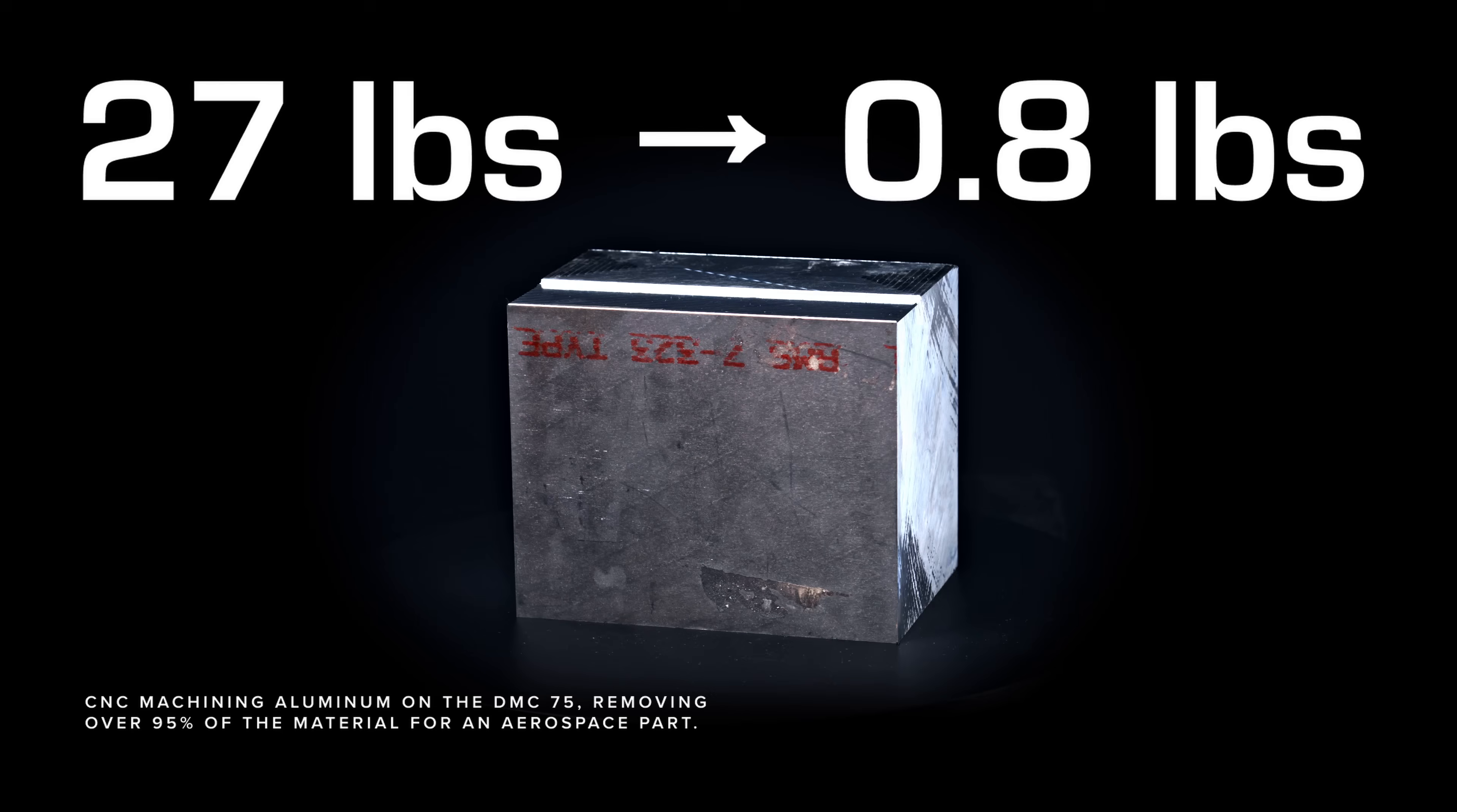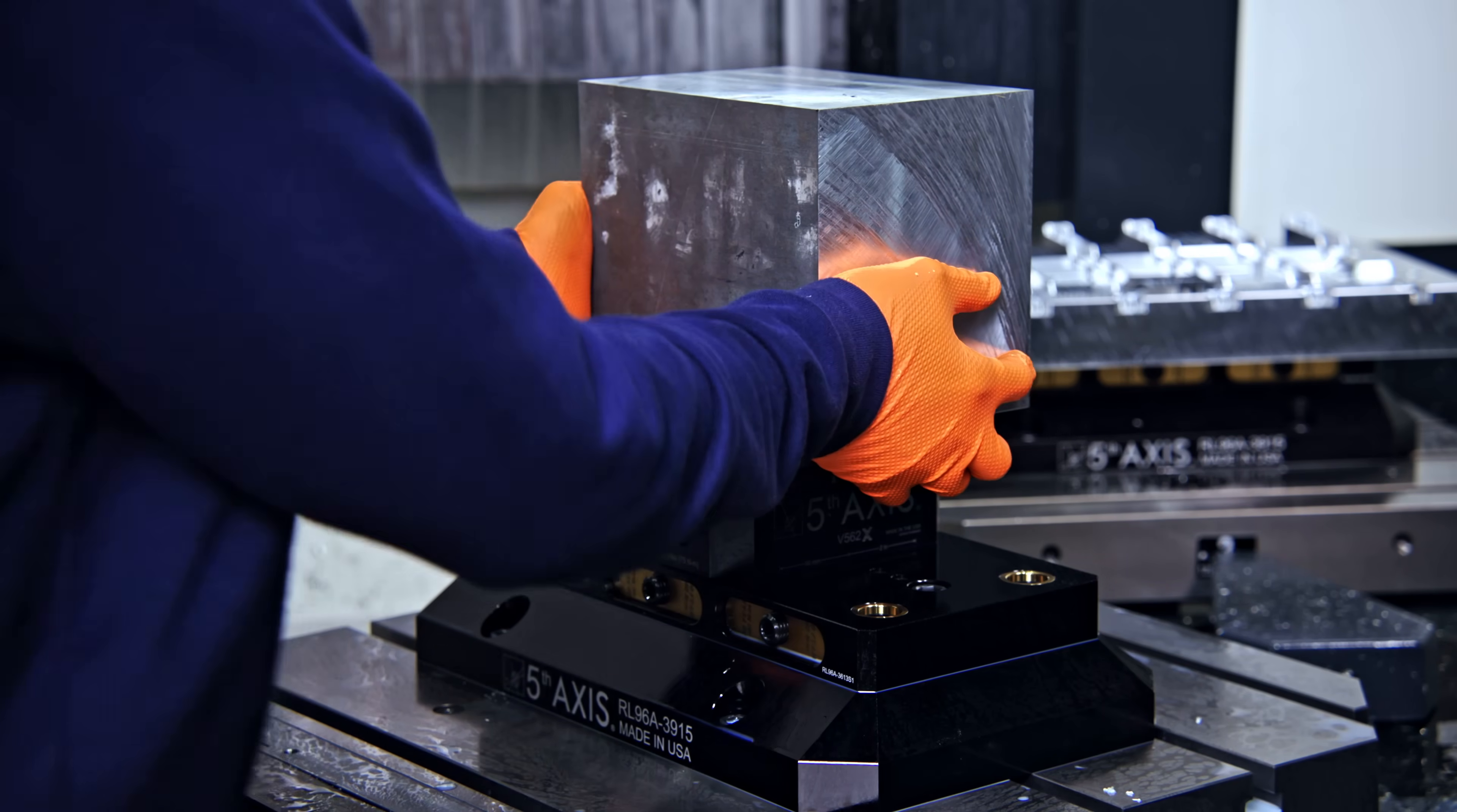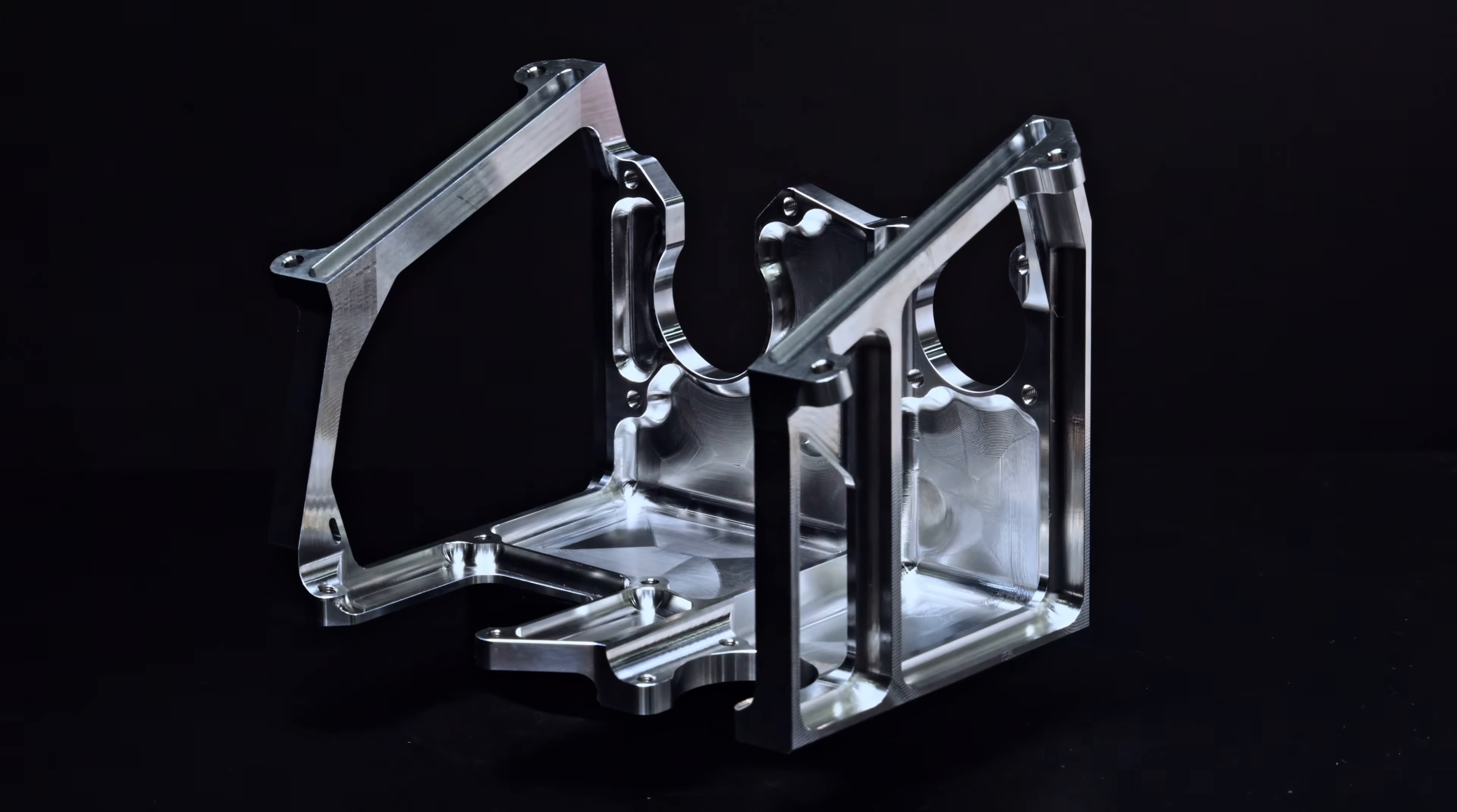On the DMC-75, we take a raw aluminum block and turn it into an aerospace component. This first operation runs for roughly six hours and is where the majority of the work takes place.